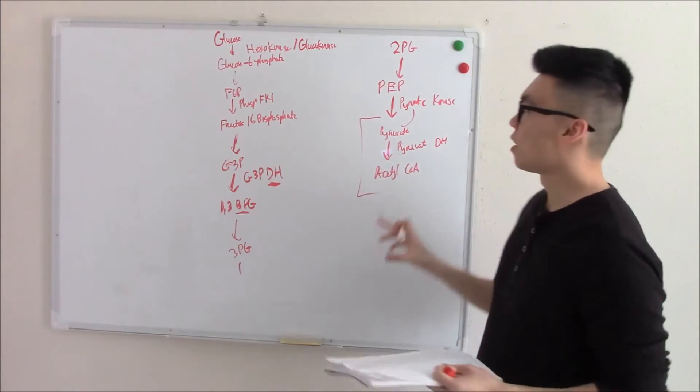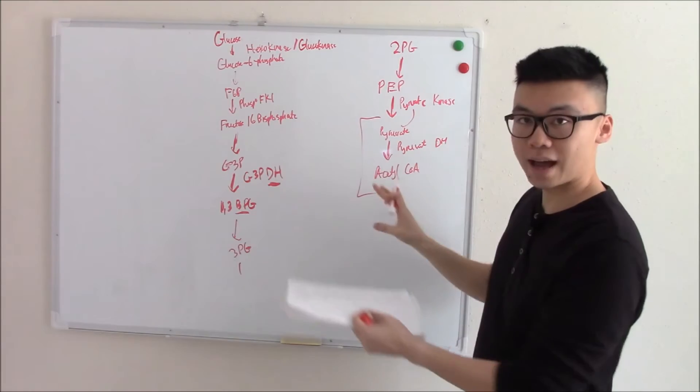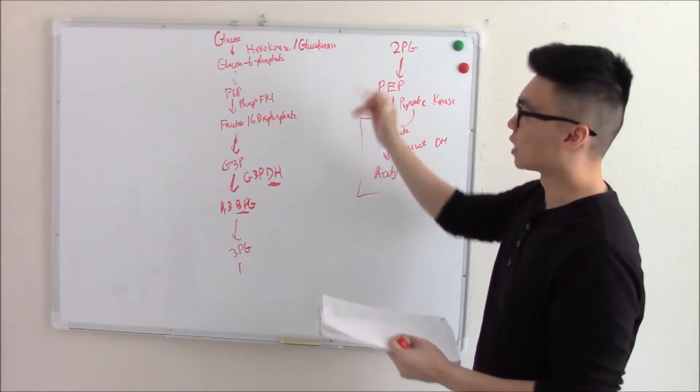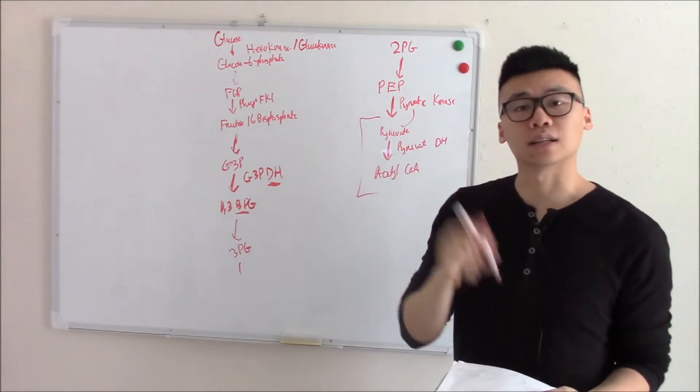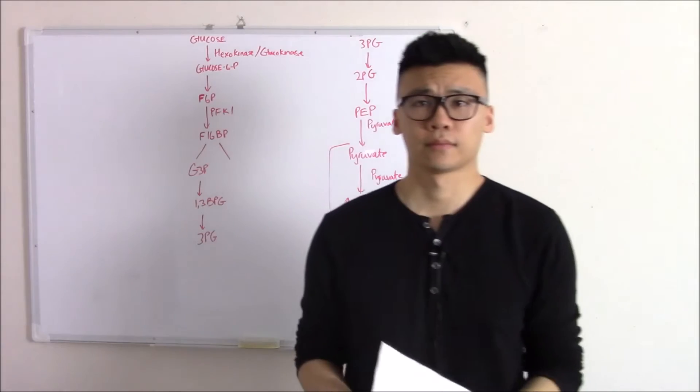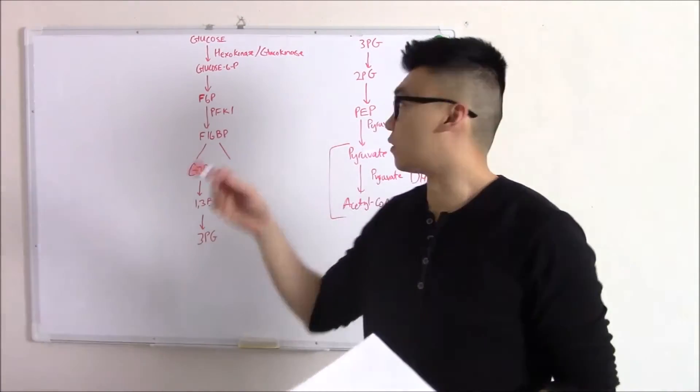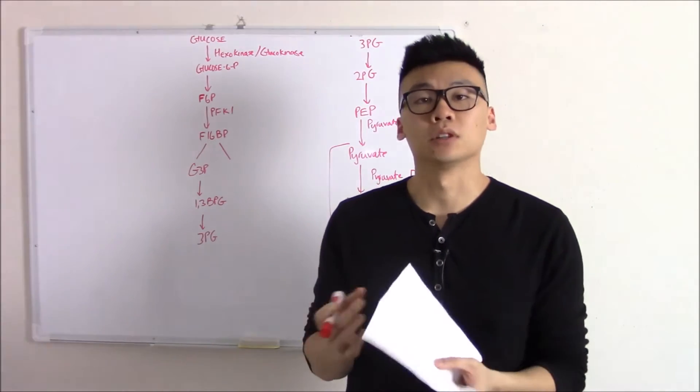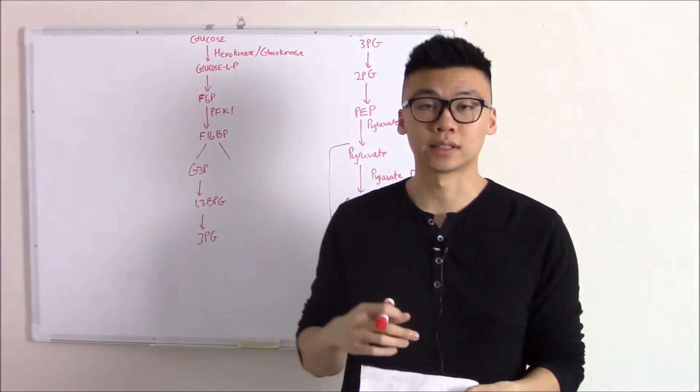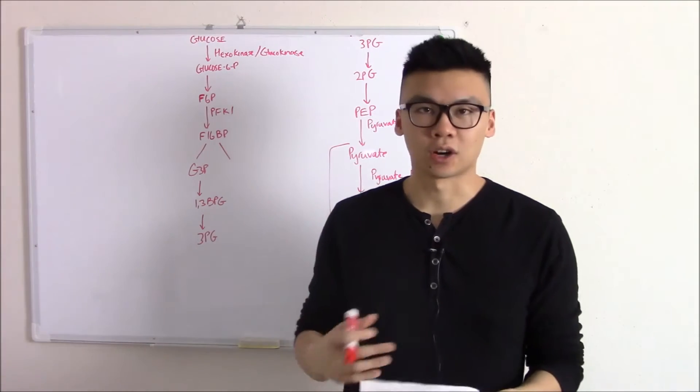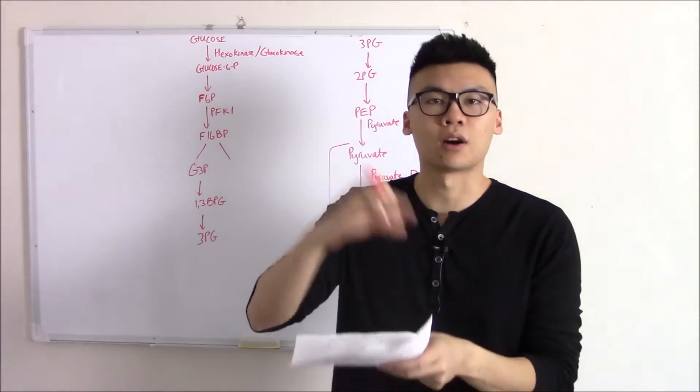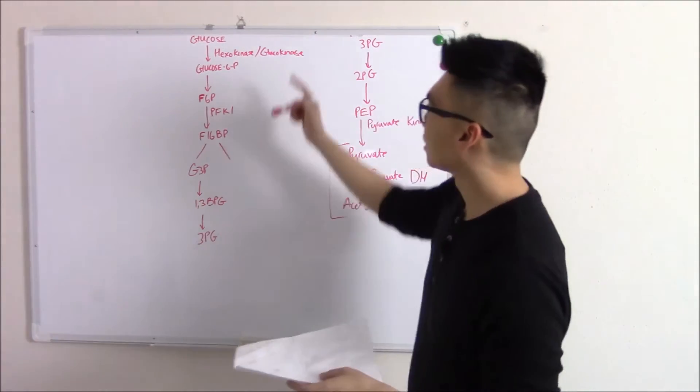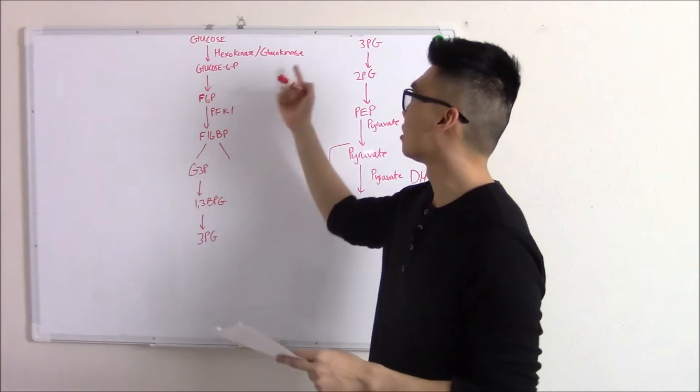This is the big picture. This is just the overall schematic, the overall reactions and the products. Now we're going to look at the nitty gritty facts. So let's start with the first step, glucose to glucose-6-phosphate. We add that phosphate group on there to trap glucose. Otherwise, it would just leave the cell. Phosphate is negatively charged. Putting it on the glucose makes it hard for it to leave. It does that by hexokinase or glucokinase.